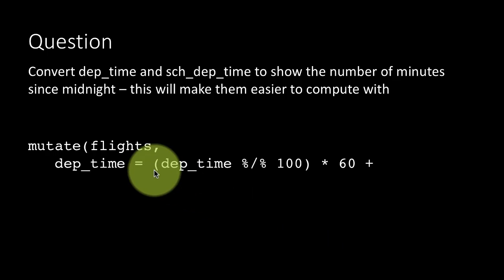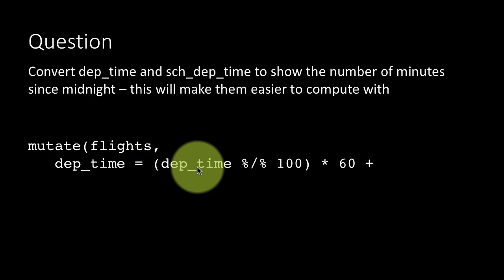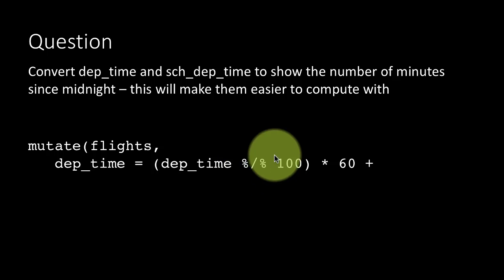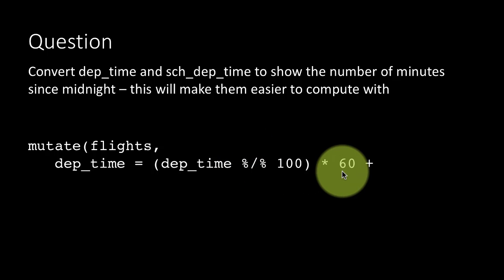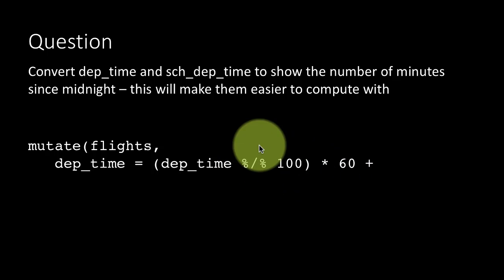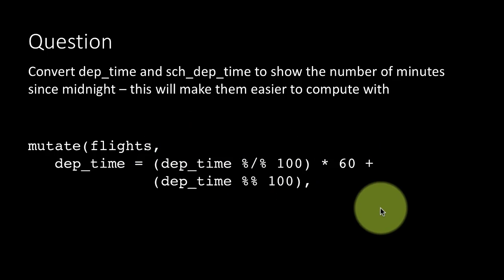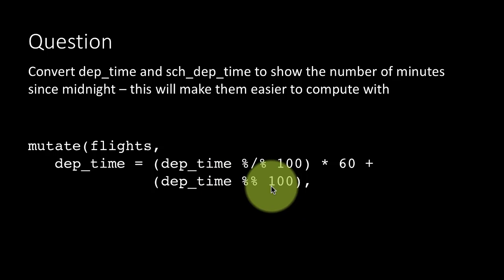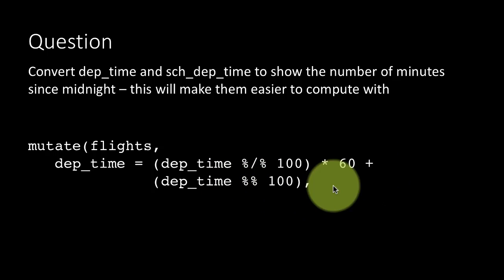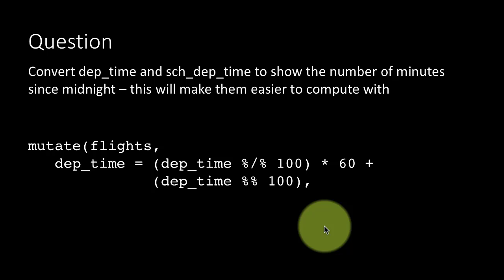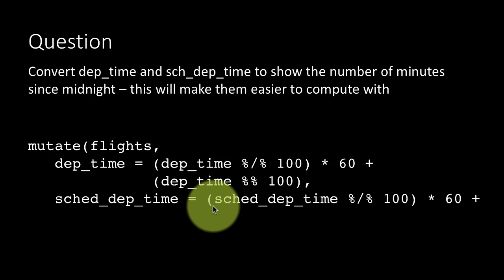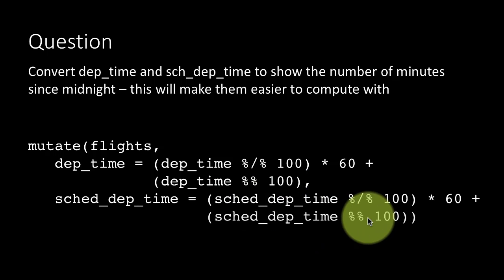So we are saying mutate flights, departure time is departure time integer divided by 100 times 60. So 517 will become 5 times 60, that's 300, plus the remainder on by 100, so plus 17, it will become 317 minutes. And same with scheduled departure time as well.